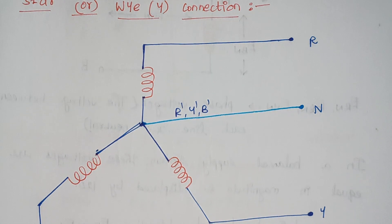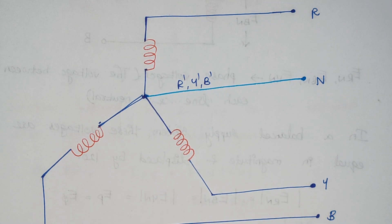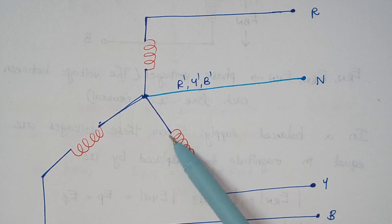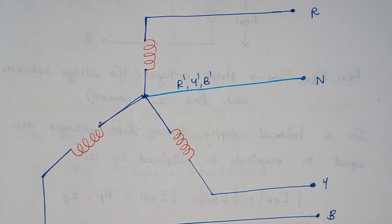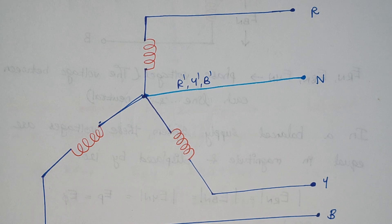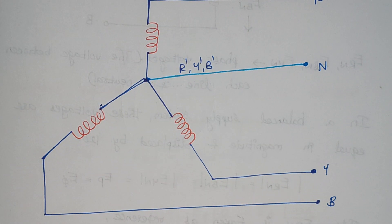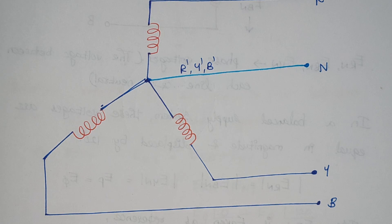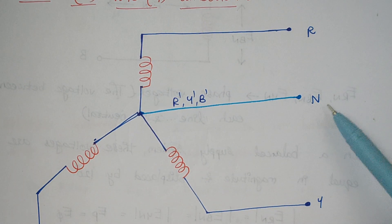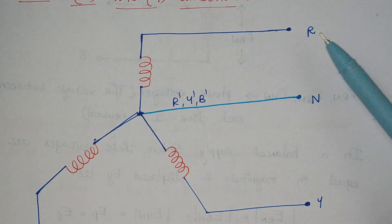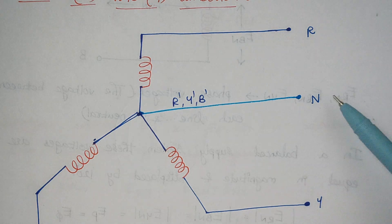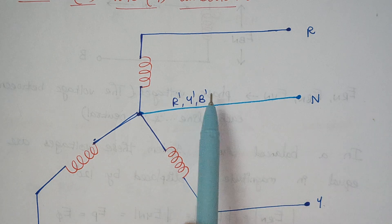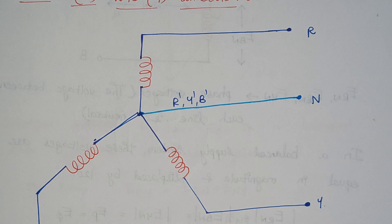In the star network, the three windings are displaced 120 degrees apart from each other and there is a neutral point N. R, Y, and B are known as the line conductors and N is the neutral point. Instead of representing it as R-N we can represent it as R, R-dash. Similarly, Y-N as Y, Y-dash and B-N as B, B-dash.